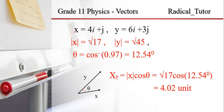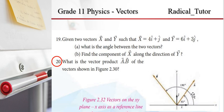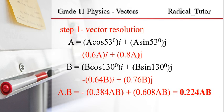So here is question number 20. What is the vector product A dot B of the vectors shown in the figure? We can see vector A and vector B. We can see the angle from the positive x-axis. A dot B gives us the result of A dot B.